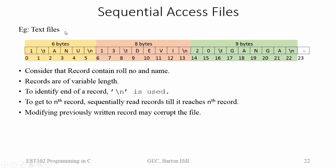A simple example for sequential access files are text files. When we say about accessing, we are talking about accessing a particular record. Using FSEEK, you can randomly go to any location in text files as well as in binary files. So we are saying sequential access files in terms of records or lines.